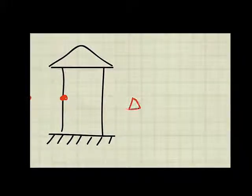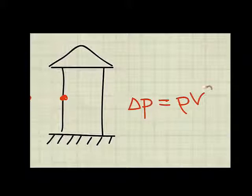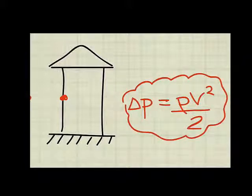So the pressure rise delta P is equal to the density of the air, the speed squared, divided by 2. The goal on this problem is to calculate this pressure rise.